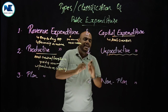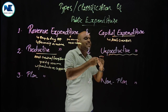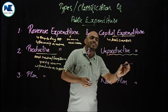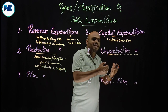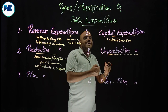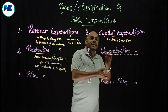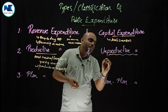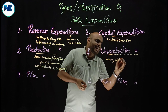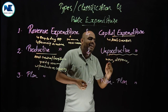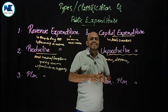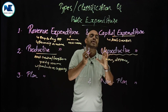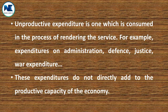Unproductive expenditure refers to government expenses that do not result in productive capacity for the country, do not create tangible assets, and do not yield future returns. Examples include war expenses, huge expenditure on defense, day-to-day administration, and maintenance of law and order. This type of expense is simply known as unproductive expenditure.